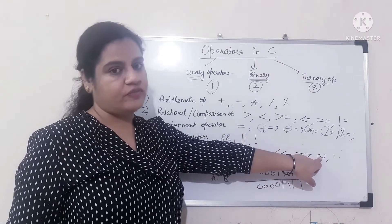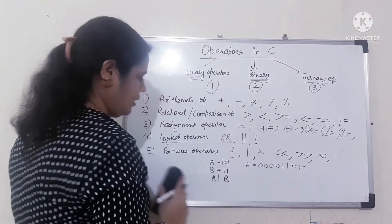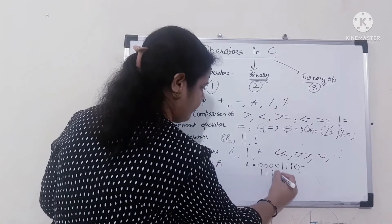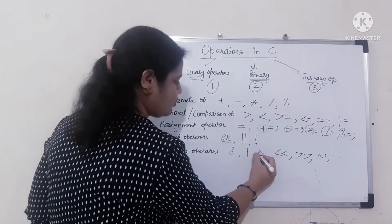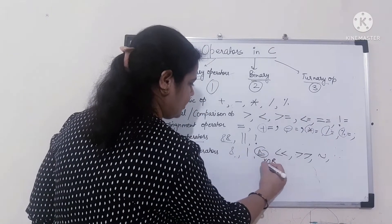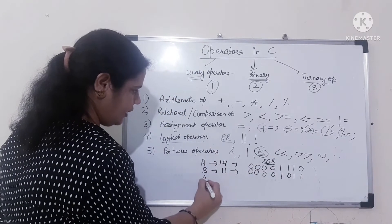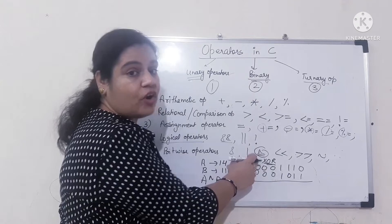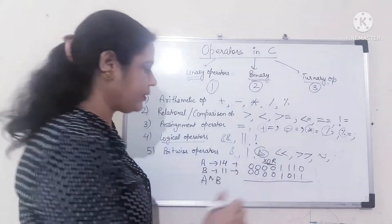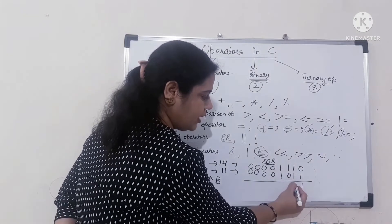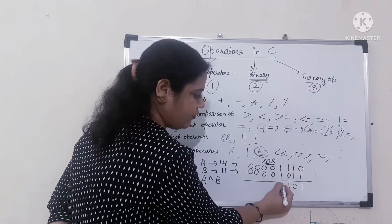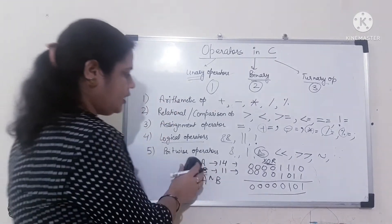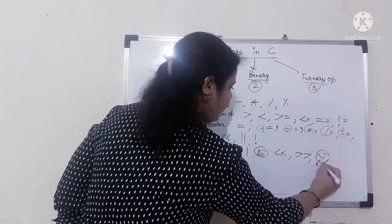Bitwise NOT reverses or flips all the bits. XOR stands for exclusive OR — only one of the two bits should be true. If both bits are 1, XOR returns false; if only one is 1, it returns true. So XOR returns 1 when exactly one bit is 1, and 0 when both are the same.